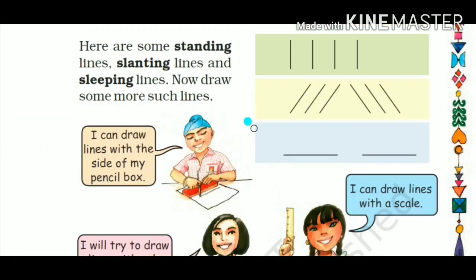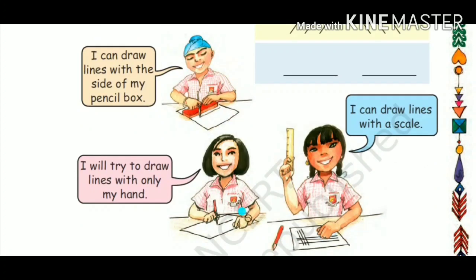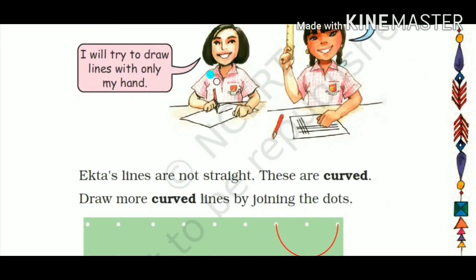Now here are some standing, slanting, and sleeping lines. You can see these lines — now draw some more such lines. You can draw lines with the help of your pencil box or scale. She is also trying to draw lines freehand — drawing without a ruler is called freehand drawing.